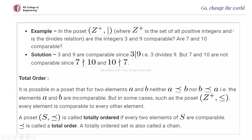Total order: it is possible in a poset that for two elements A and B, neither A ≤ B nor B ≤ A — meaning the elements are incomparable. But in some posets, such as (Z⁺, ≤), every element is comparable to every other element. A poset (S, ≤) is called totally ordered if every two elements of S are comparable. Then ≤ is called a total order and the totally ordered set is also called a chain. We will stop here and continue in the next video.